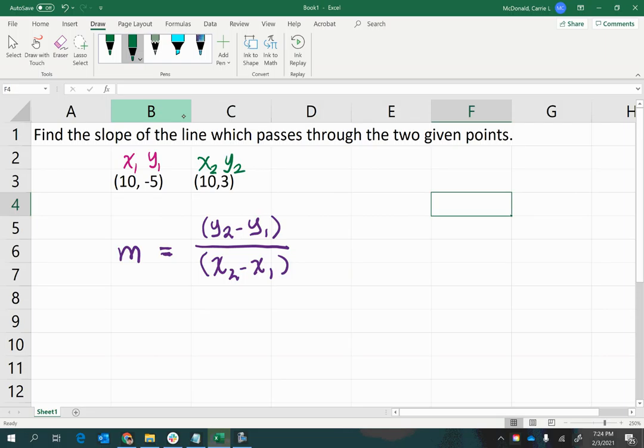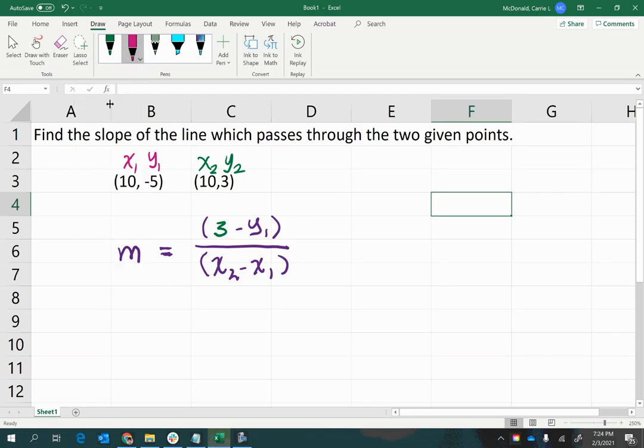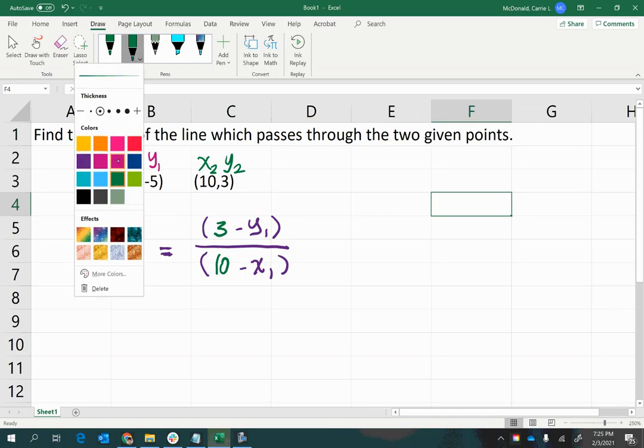And then you can go in and replace the values. So, we can replace the y2 with 3. Or maybe the better order to do this in is with my color that I already have selected. So, let's also put in the x2, which is 10. And then we can replace the coordinates of the first point, which I have coded in pink.